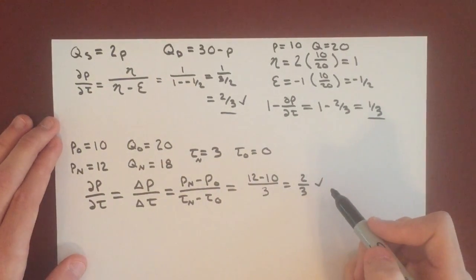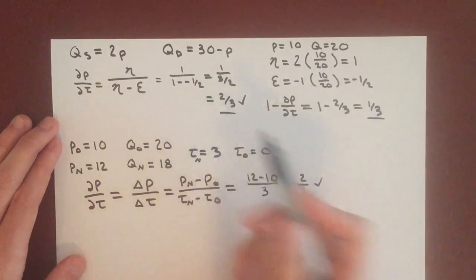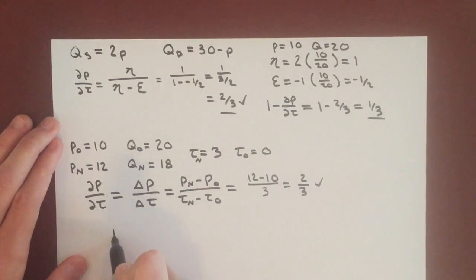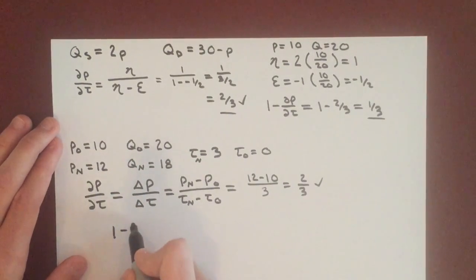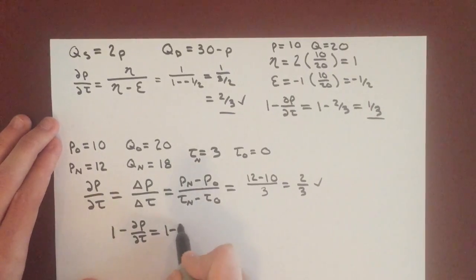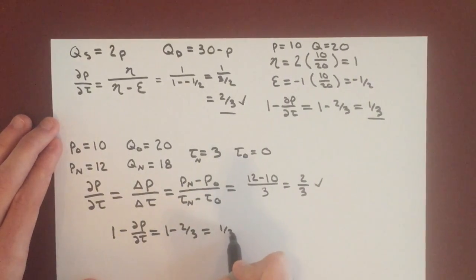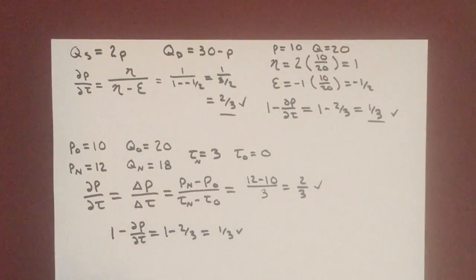After the shift, we get the same as what we expected, which is perfect. You can confirm that the incidence on producers will be the same. Incidence on producers is 1 minus the incidence on consumers, so it's 1 minus 2/3, which is 1/3, which again checks out. That's how you find incidence on producers and consumers.